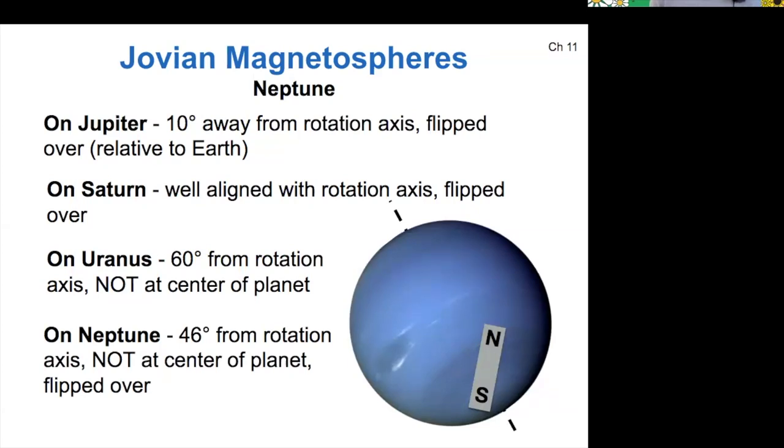The magnetospheres of Jupiter and Saturn are relatively easy to understand in their origin. There's a layer of metallic hydrogen, and that rotating metal creates a magnetic field in the same way as Earth's liquid iron core does.